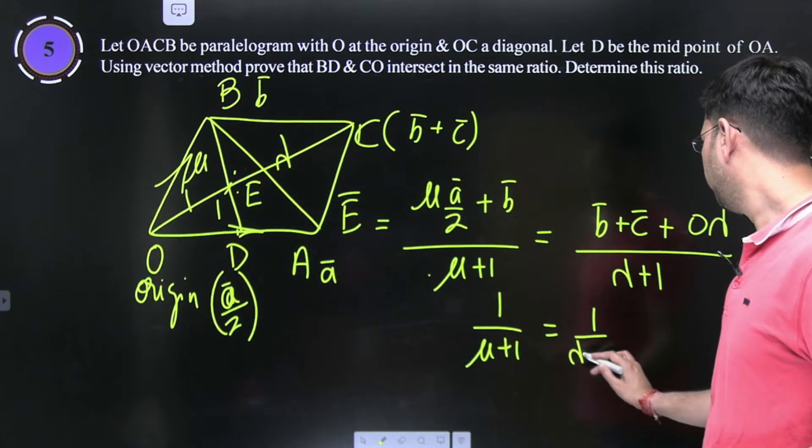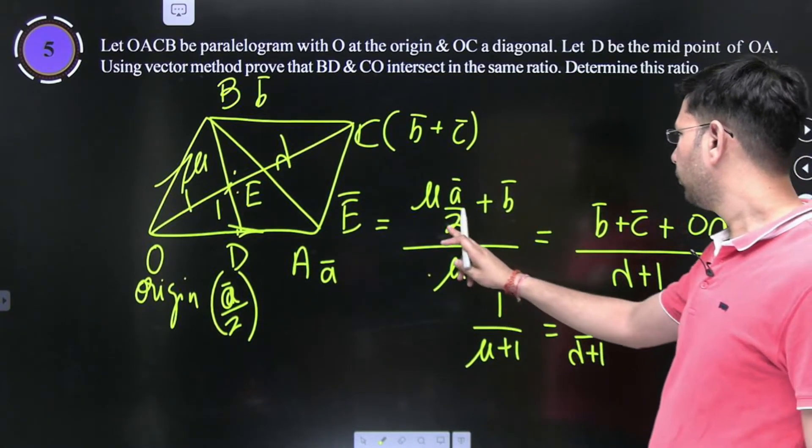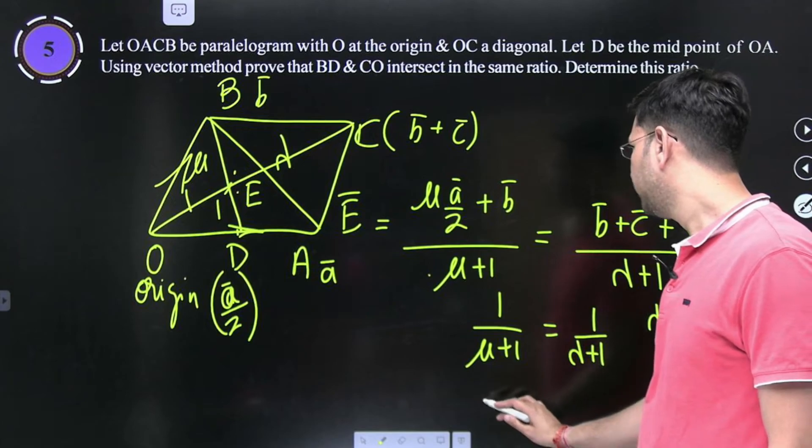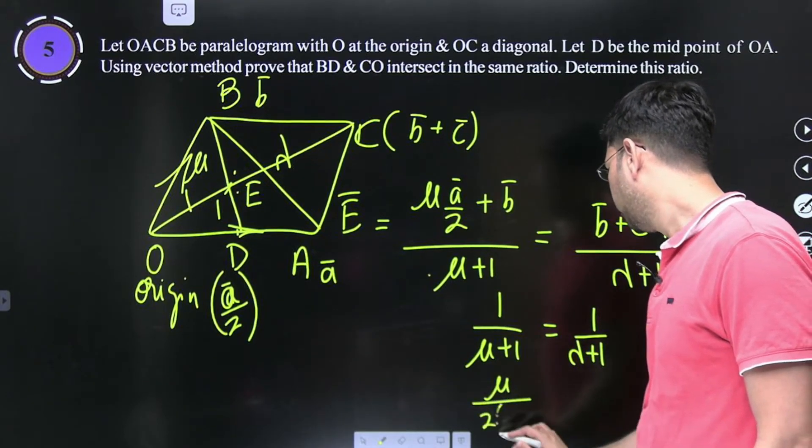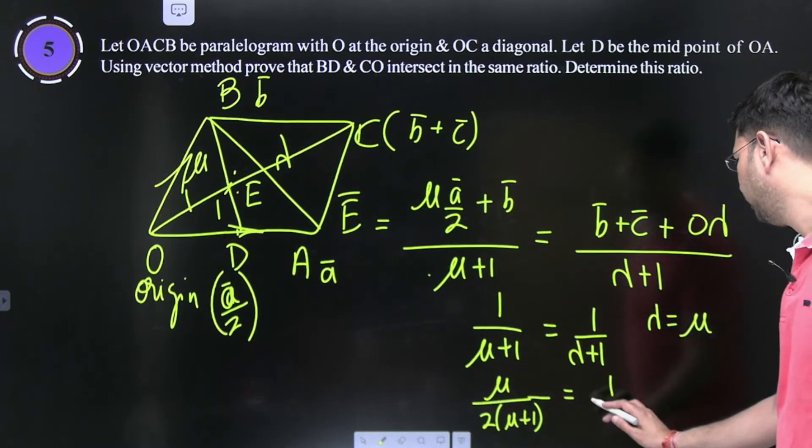Right side 1 upon lambda plus 1, this is lambda equal to mu. Then comparing mu by 2 into mu plus 1 is equal to 1 upon lambda plus 1.